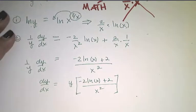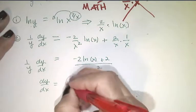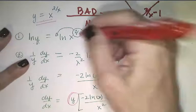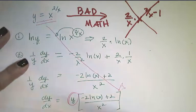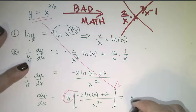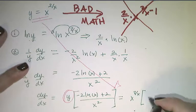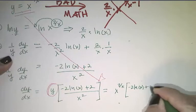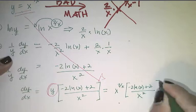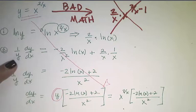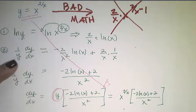except that I want my answer to be entirely in terms of x. I have this floating y over here, and from the original problem I know what y is in terms of x. So I'm going to replace y with x to the 2 over x, and I get x to the 2 over x times negative 2 ln(x) plus 2, all over x squared. Push pause if you need to, rewind and think about it, but let's move on to our next example.